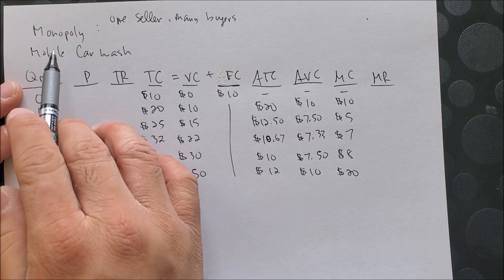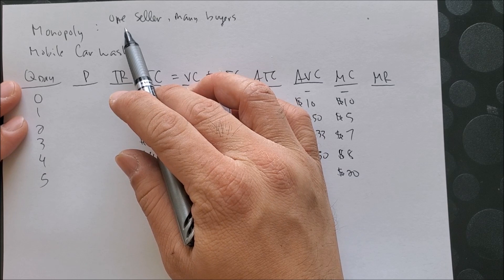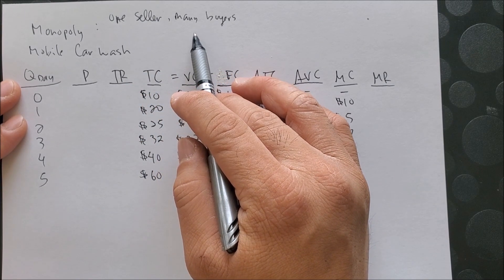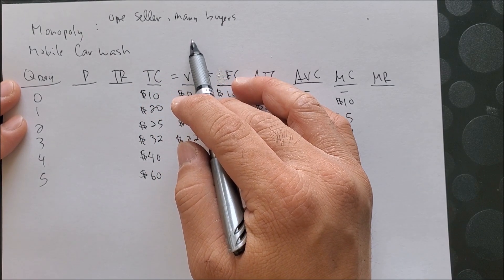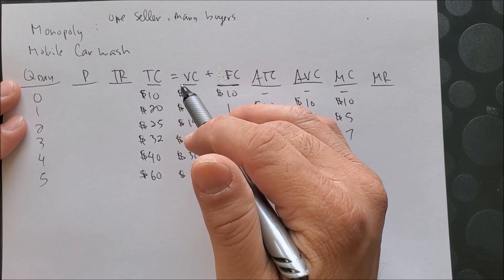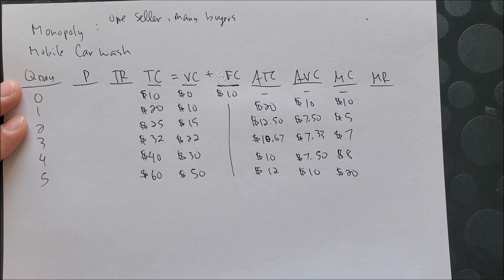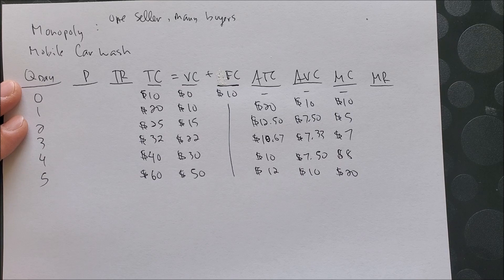In the case of a monopoly market, there is only one seller and there are many buyers. So unlike in a perfectly competitive market where there were many sellers and many buyers, in this case we only have one seller and many buyers.